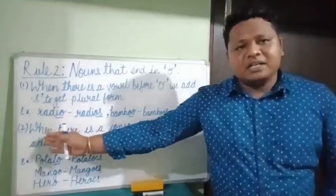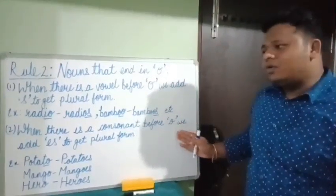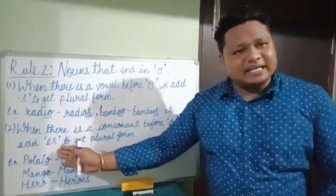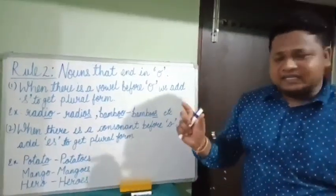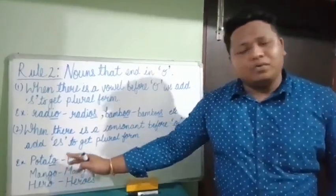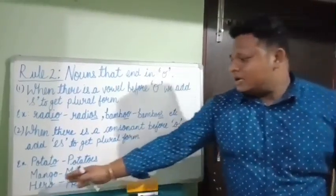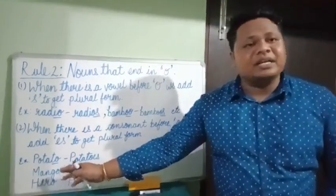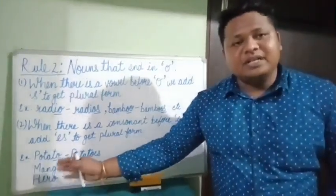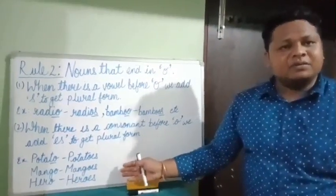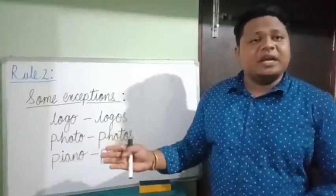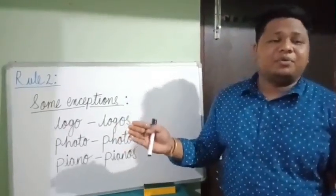Condition number two: when there is a consonant before O, we add ES to get the plural form. For example, potato — consonant T before O, so we add ES: potatoes. Mango — consonant G, so we add ES: mangoes. Hero — consonant R, so we add ES: heroes.